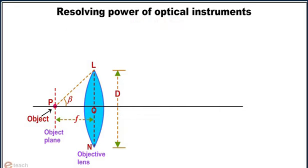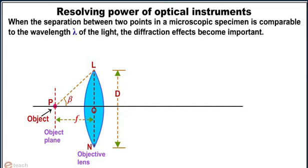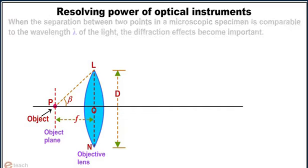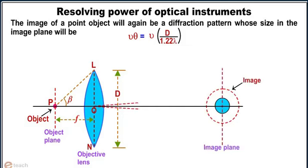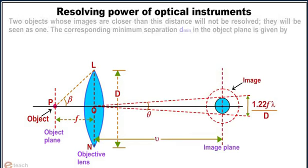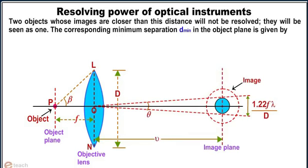When the separation between two points in a microscopic specimen is comparable to the wavelength lambda of the light, the diffraction effects become important. The image of a point object will again be a diffraction pattern whose size in the image plane will be v theta equals v times capital D divided by 1.22 lambda. Two objects whose images are closer than this distance will not be resolved. They will be seen as one.